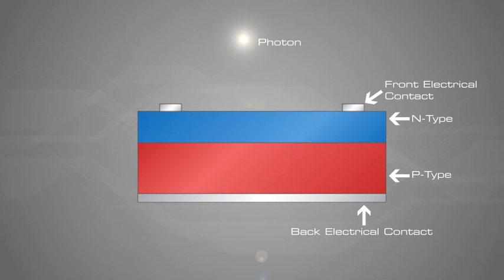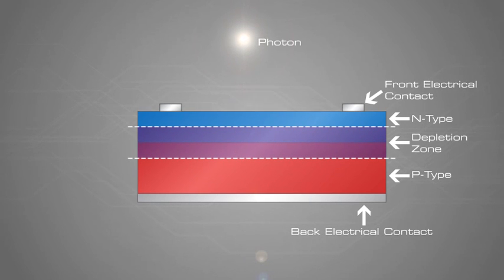The generation of electric current happens inside the depletion zone of the P-N junction. The depletion zone, as explained previously with the diode, is the area around the P-N junction where the electrons from the N-type silicon have diffused into the holes of the P-type material.